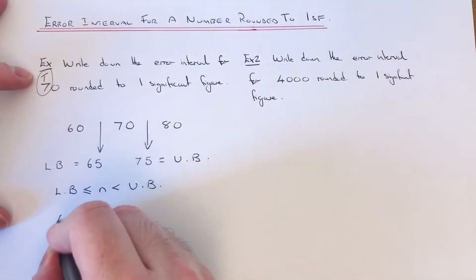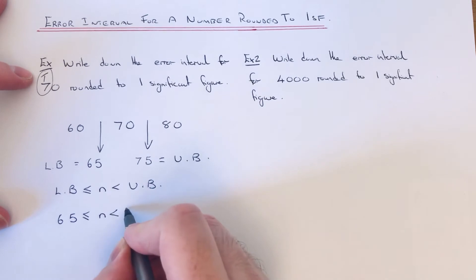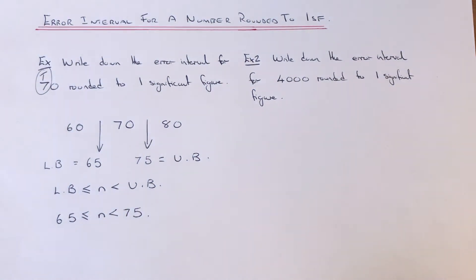Okay, so we're going to put our lower bound first, which is 65, then a less than or equal to, then N, then less than, and then the upper bound is 75. This is our final answer. So let's move on to example two then.